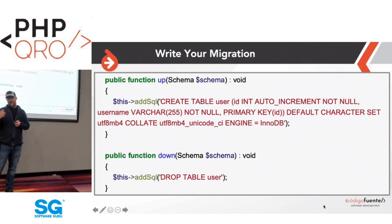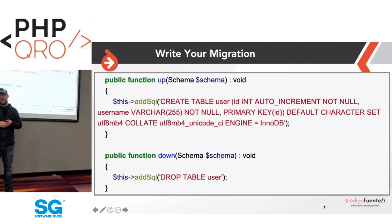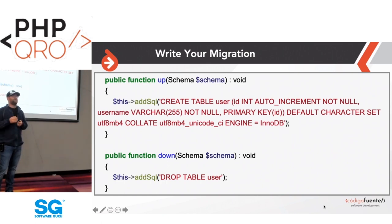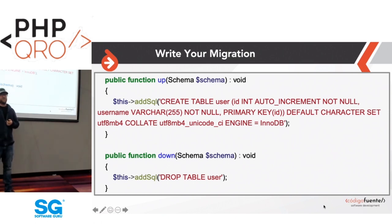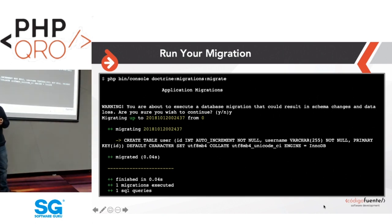My preference is to not use the schema object functionality. I prefer to have very exact, specific SQL that can be reviewed by your teammates, with a 100% guarantee that the SQL that gets executed is exactly what you see in the database migration. When you run that migration, you can see it outputs the SQL defined in the up method.